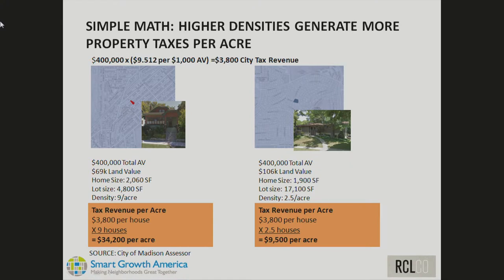Looking at two Madison neighborhoods — one with a lot size of about 4,800 square feet equating to roughly 9 units per acre, the other about 17,000 square feet equating to about 2.5 units per acre — the total home value ends up being similar, meaning a smaller lot doesn't necessarily mean a less valuable home. The result is that on a per-acre basis, the higher-density scenario generates about $34,000 per acre in revenue for the city, whereas the lower-density scenario generates only about $9,500 per acre.